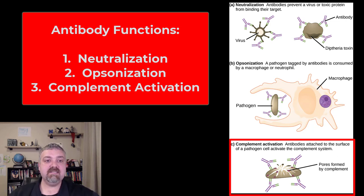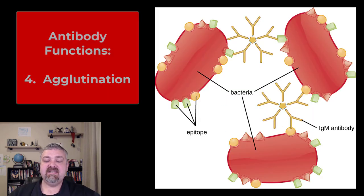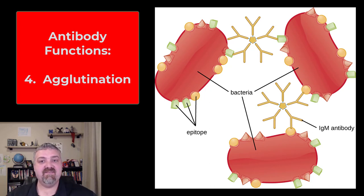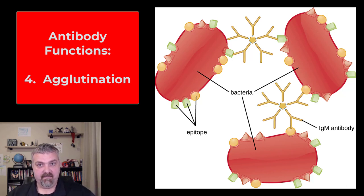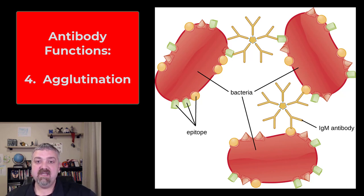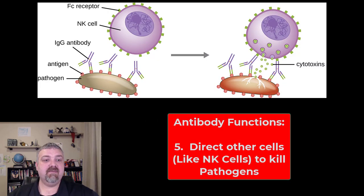Those are three critically important functions. We also have agglutination. Here you see IgM antibodies — they're the best at this because they have five different binding sites. Agglutination is when antibodies cause cells to clump together, making them easier for phagocytes to see and ingest. A big macrophage can come along and engulf all three of these bacteria in one bite. That's agglutination.